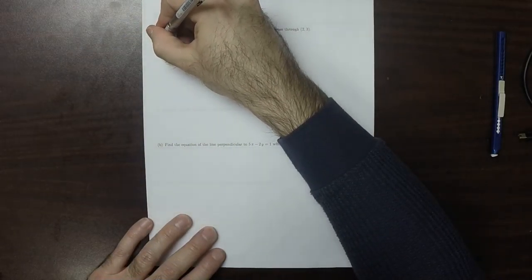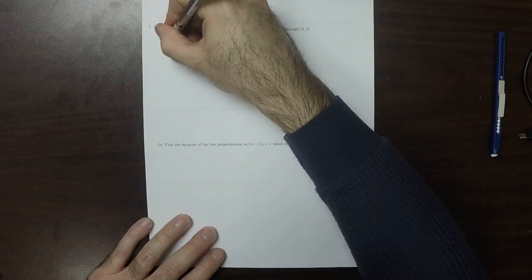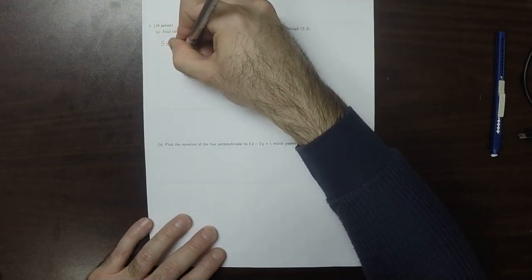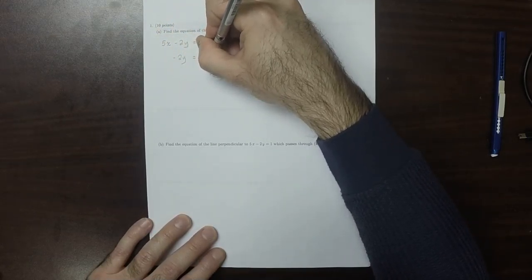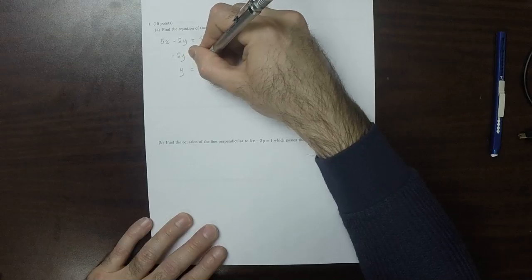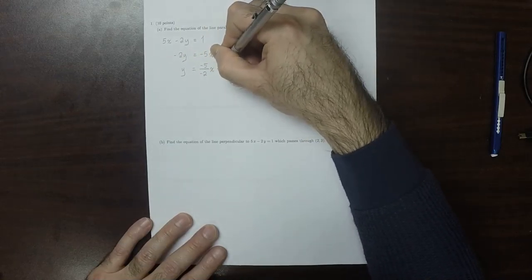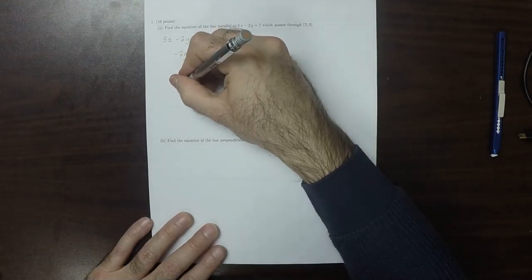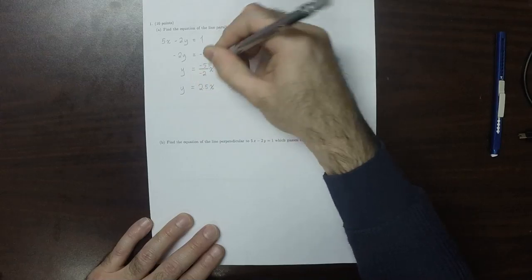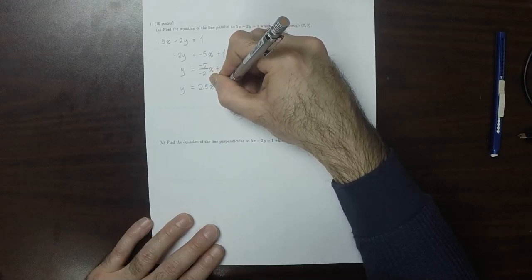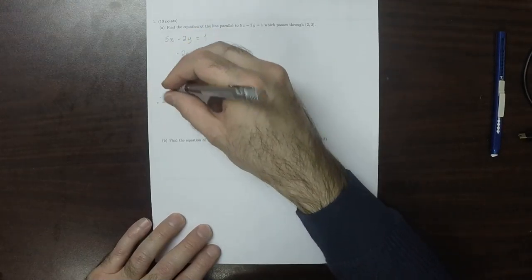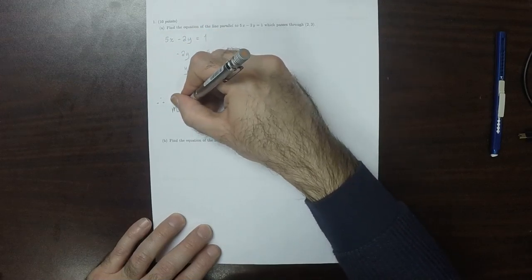If we take this line, 5x minus 2y equal to 1, then that's negative 2y is negative 5x plus 1. And if we divide by negative 2, that's y is negative 5 over negative 2x plus 1 over negative 2, which simplifies to 2.5x minus 0.5. Therefore, the slope that we're looking for is 2.5.